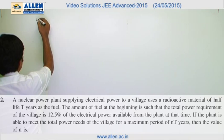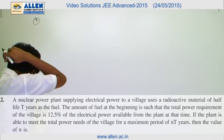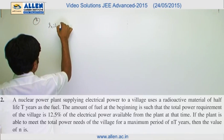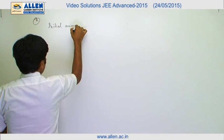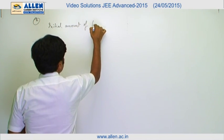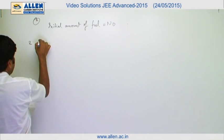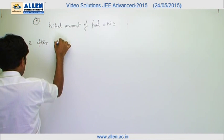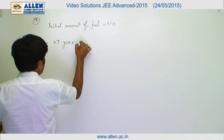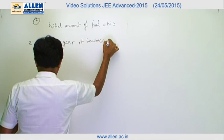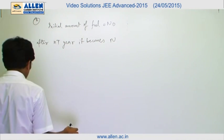In question number 2, let us assume that initial amount of fuel is equal to N naught, and after N T years it becomes N. Therefore,